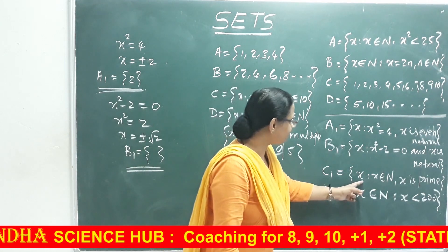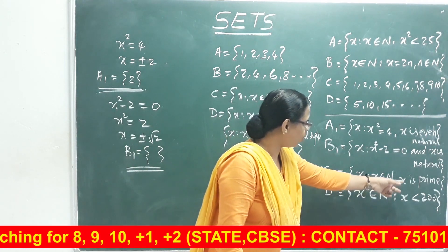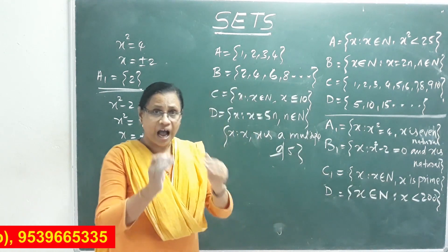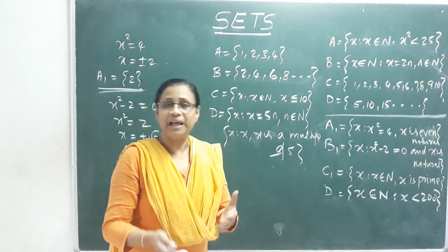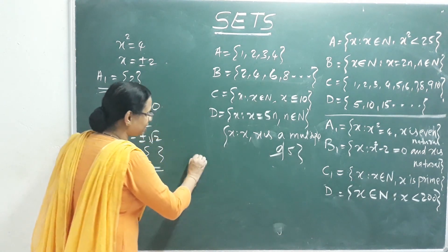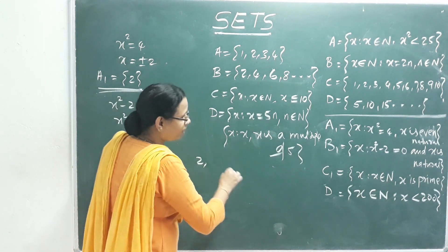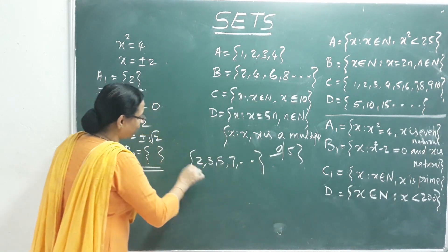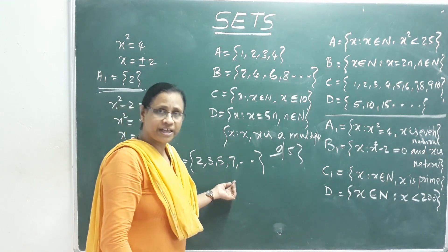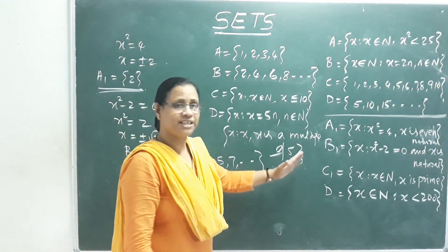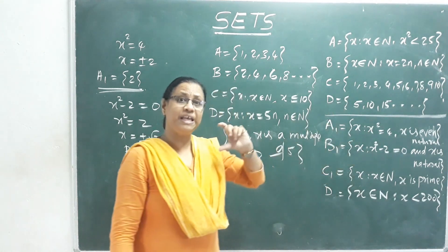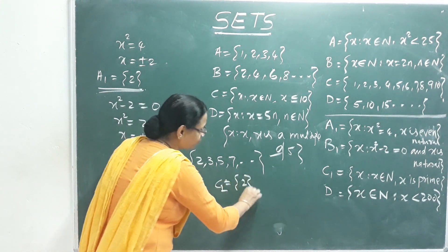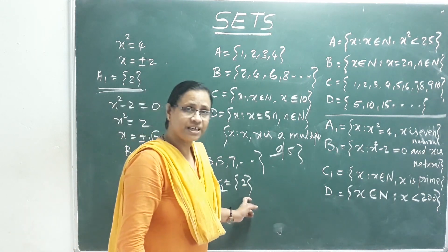Another example: {x : x ∈ N, x is prime}. Prime natural numbers are 2, 3, 5, 7, 11... This is an infinite set because primes continue without bound. The even primes form a singleton set: C1 = {2}, since 2 is the only even prime number.